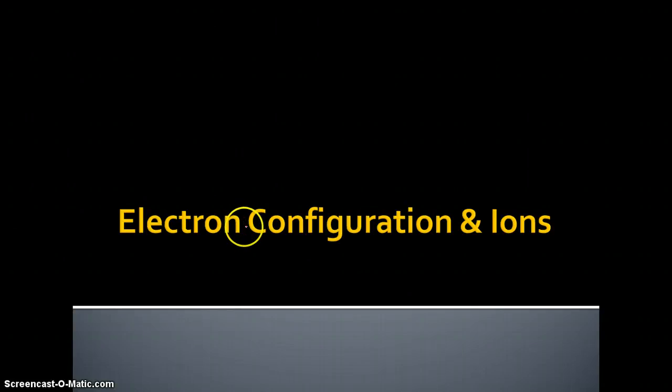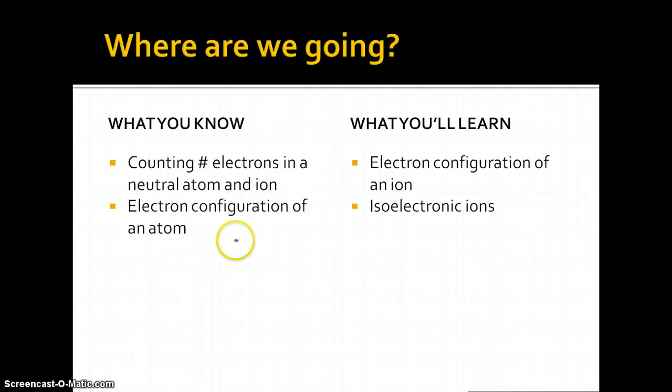Hello students, today we're going to learn about the electron configuration of ions and how we can figure that out. So first of all, what do you know already? You already know how to count the number of electrons in a neutral atom as it is in the periodic table as well as an ion.